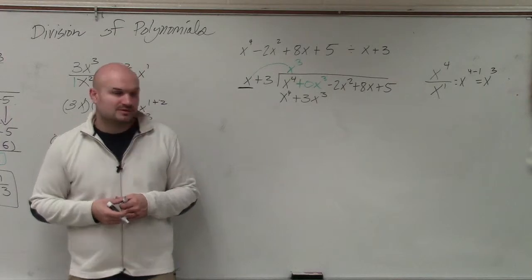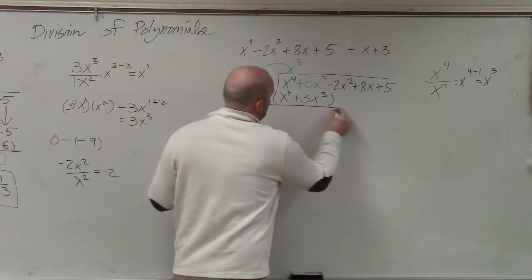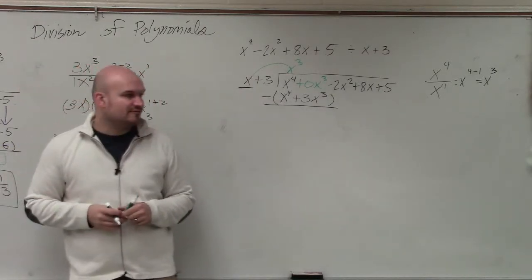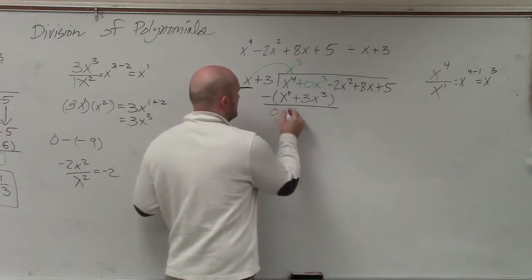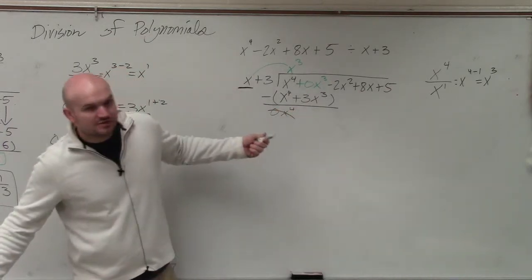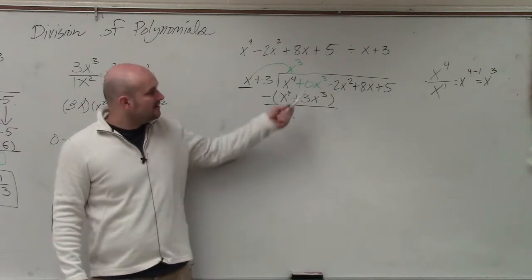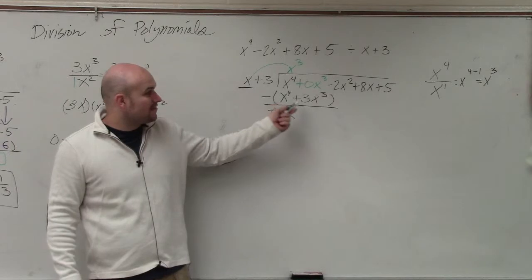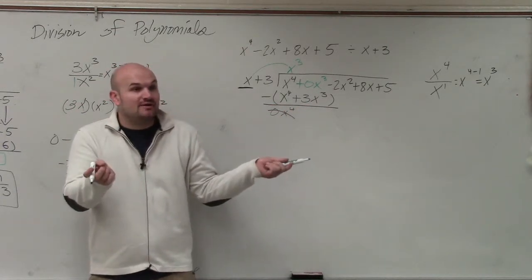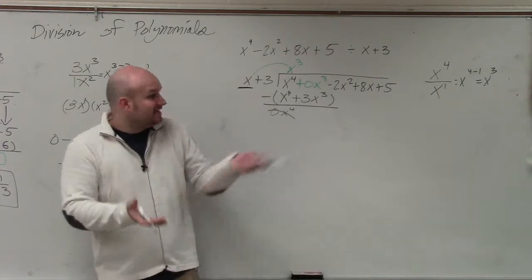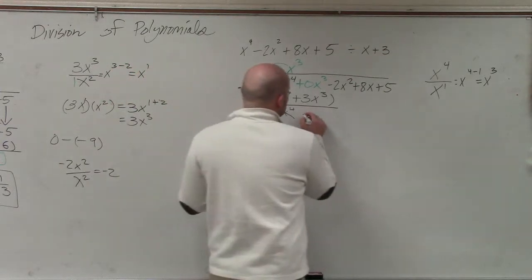Now, we subtract the rows. x to the fourth minus x to the fourth is just going to be 0x to the fourth. And as I mentioned, as long as you did it correctly, you should always have 0 in this first portion. Then 0x cubed minus 3x cubed. So if you have 0 and you subtract 3 from it, you are now going to have negative. Since we're talking about x cubed, then it's going to be a negative 3x cubed.